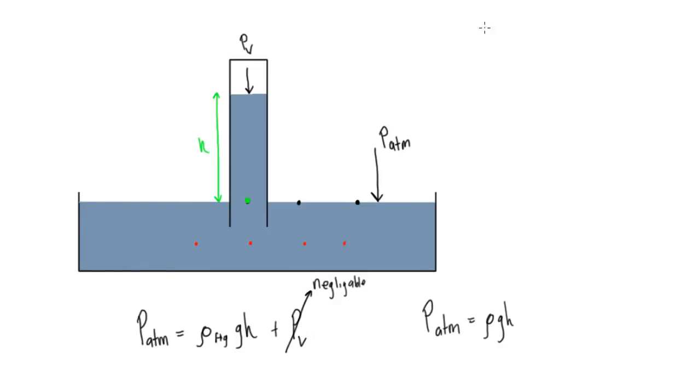Our example is: given H equals 760 millimeters of mercury. This is a very common way to give height—literally how many millimeters tall the column is. So we're given H, find P atmosphere.